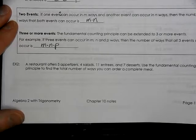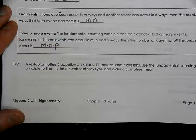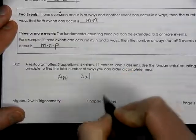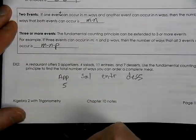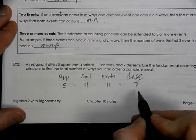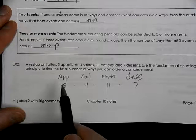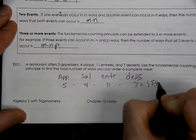Let's say you're boxing up meals — putting an appetizer, a salad, an entree, and a dessert into a box. How many boxes would you have with something different every time? Even one item changed, like a different dessert, counts as a different box. For appetizers there are five, salads four, entrees eleven, and desserts seven. Multiplying all of those together, we come up with 1,540 ways.